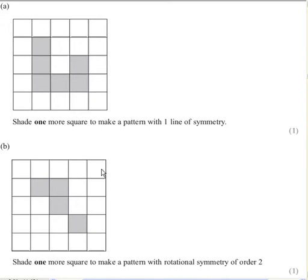Okay, what are we on now? Question eight. Shade one more square to make a pattern with one line of symmetry.